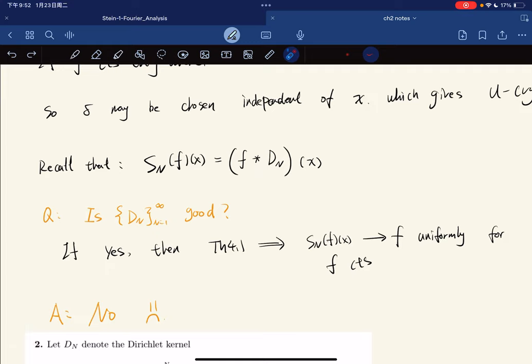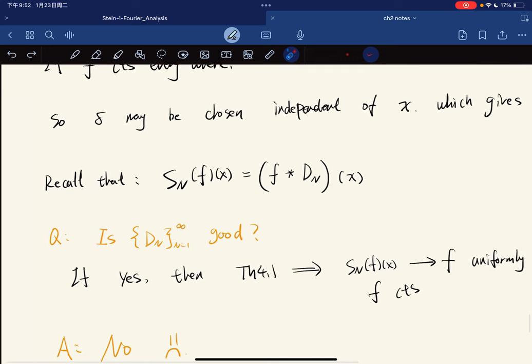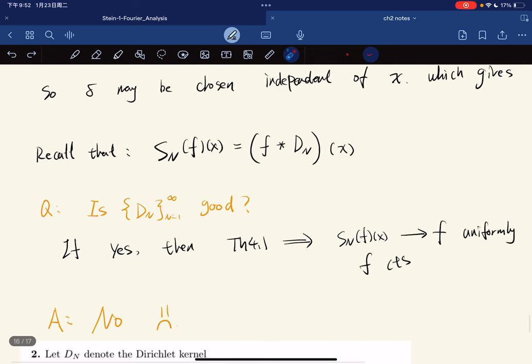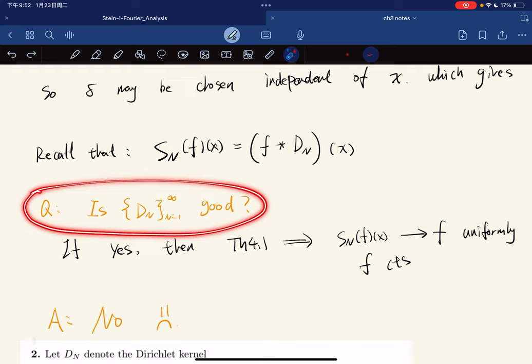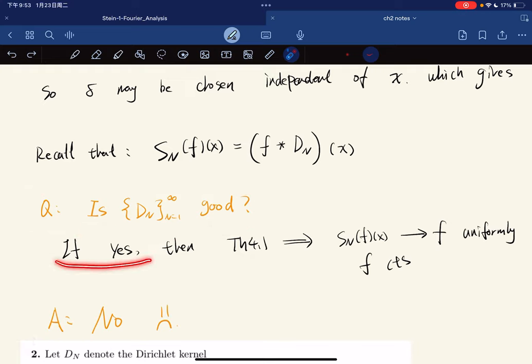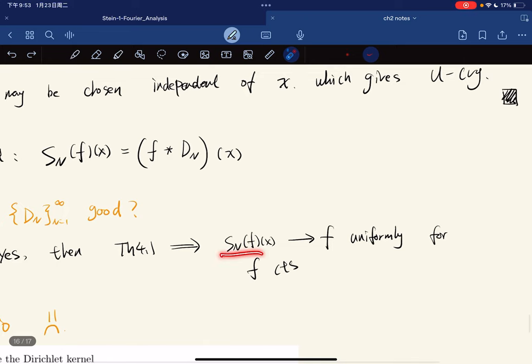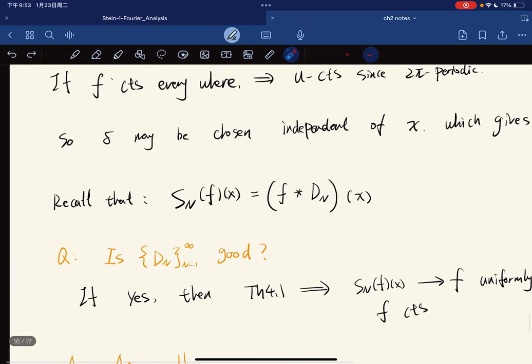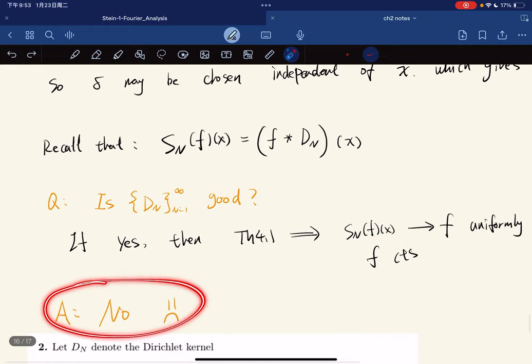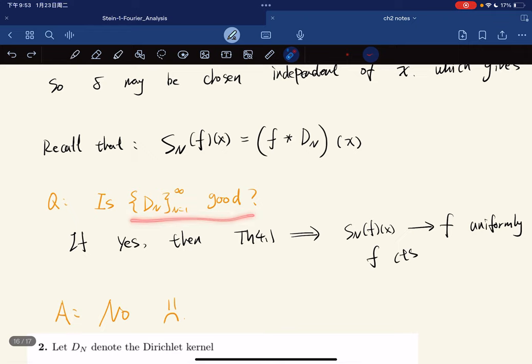Recall that the partial sum of Fourier series is the convolution of f with the Dirichlet kernel. Here's a natural question: Is the Dirichlet kernel a good kernel? If it were a good kernel, the last theorem would imply that the Fourier series converges to the function uniformly for f continuous. But mathematically we don't have it to be a good kernel.